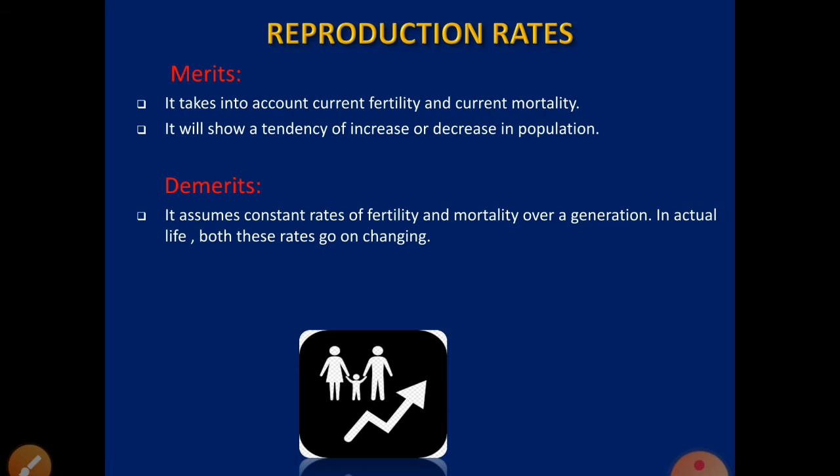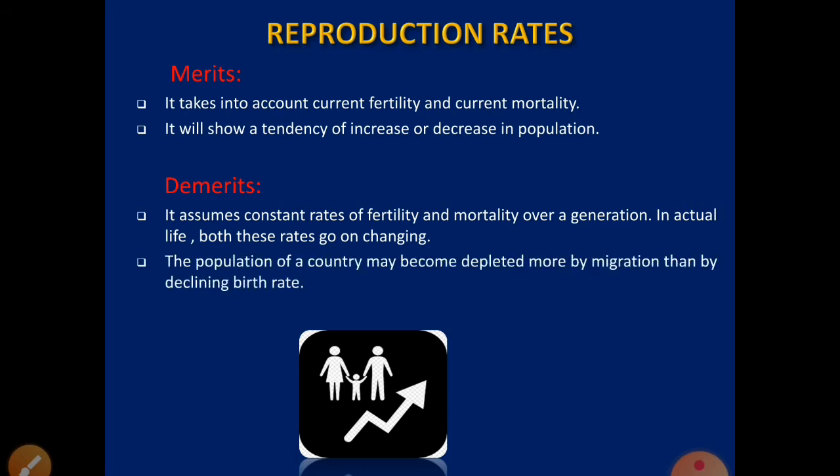Similarly for mortality — the death rate was high 20 years ago, but now it has been greatly reduced because medical facilities were not as advanced then as they are now. That is why NRR's assumption of constant rates of fertility and mortality over a generation is a major drawback, as these rates change as generations change. The second demerit is that the population of a country may become depleted more by migration than by declining birth rate.